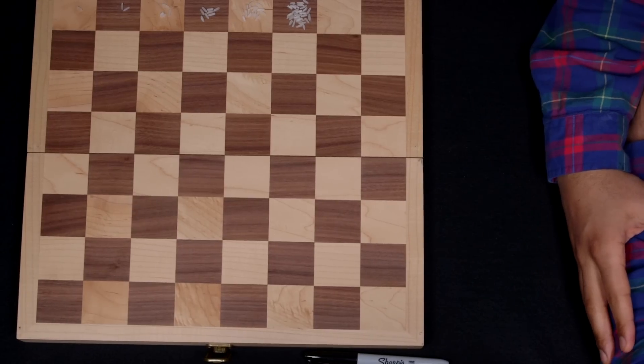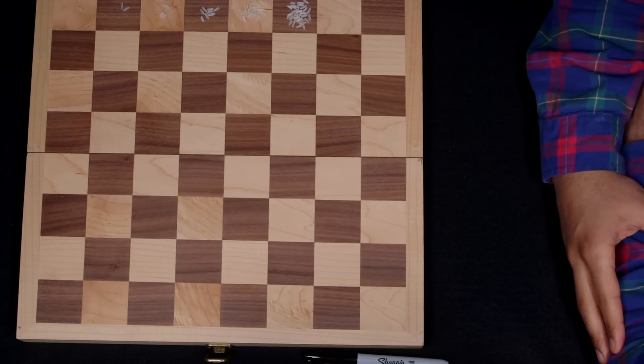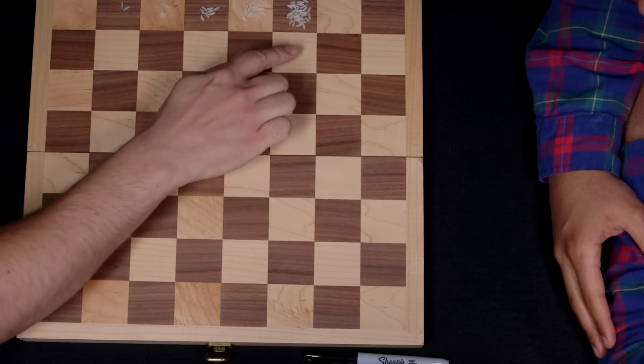What I did is I put one grain of rice in the first square. That's right. There's 64 squares on the board. Yep. And at each consecutive square, I doubled the amount of rice. How much rice do you think would be on this square? On that square.